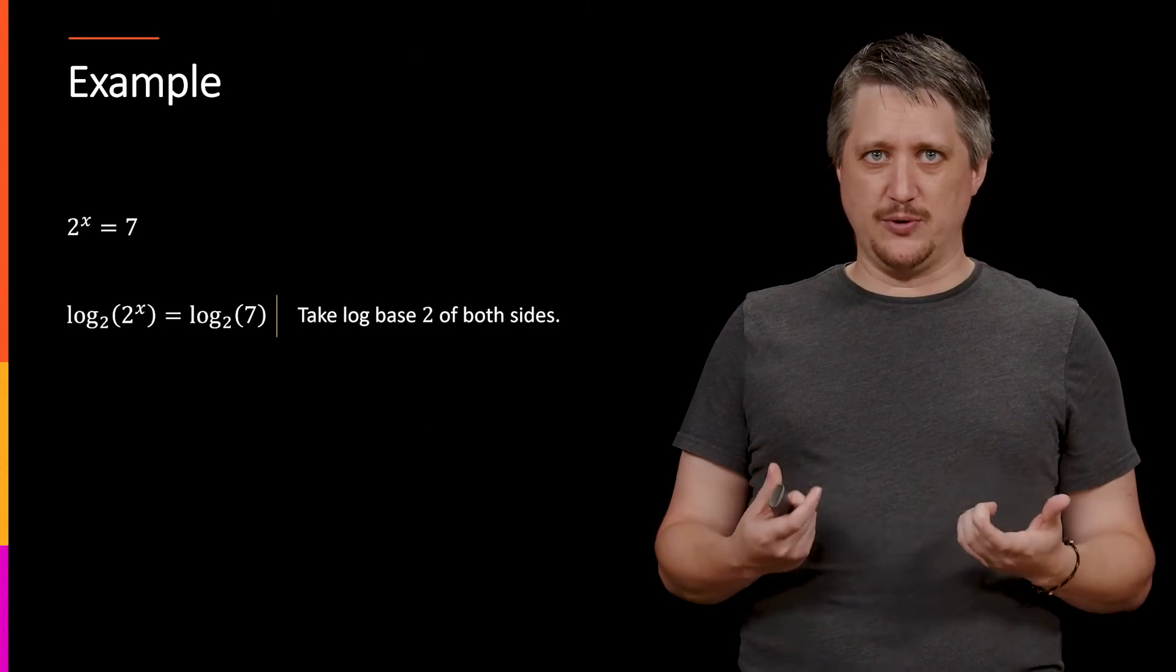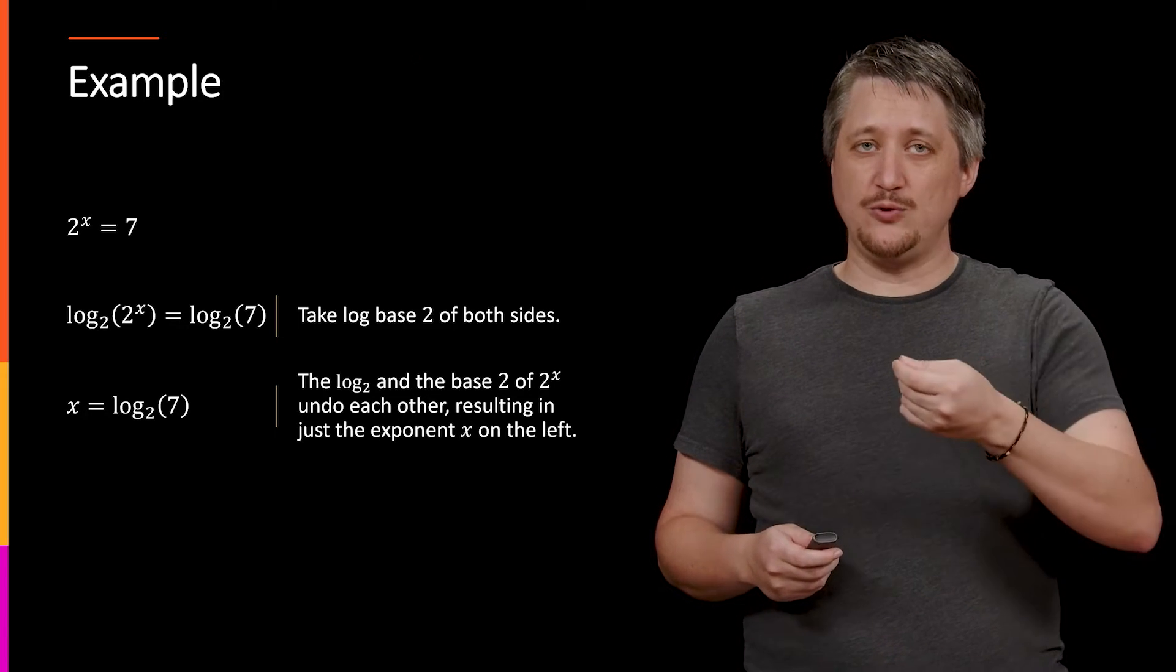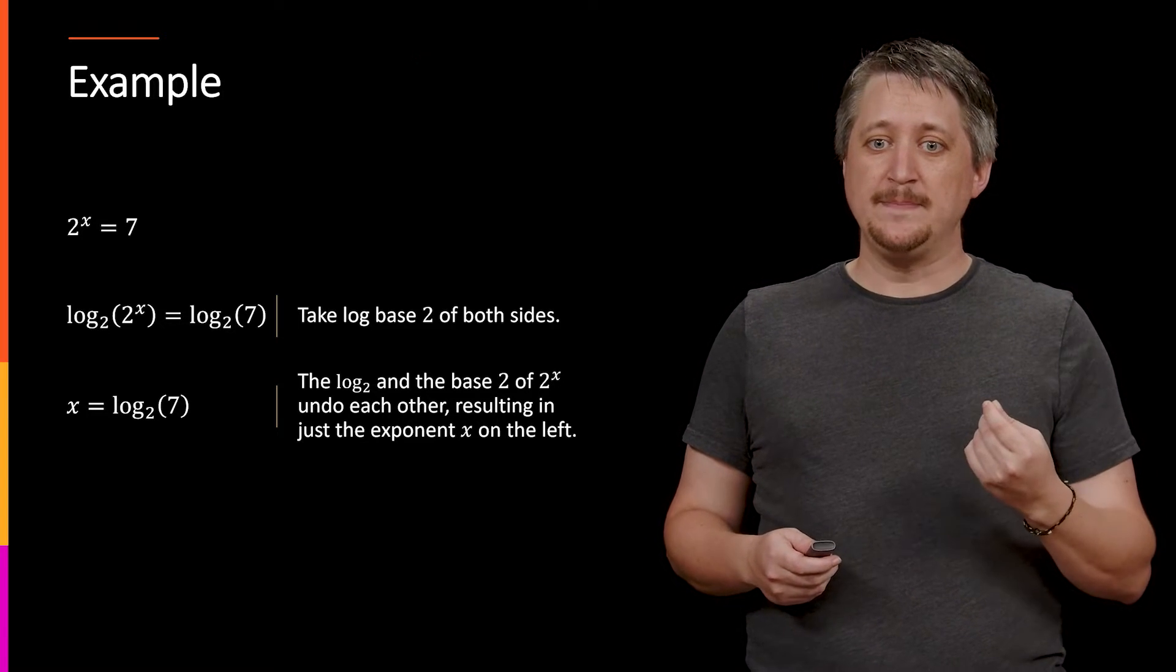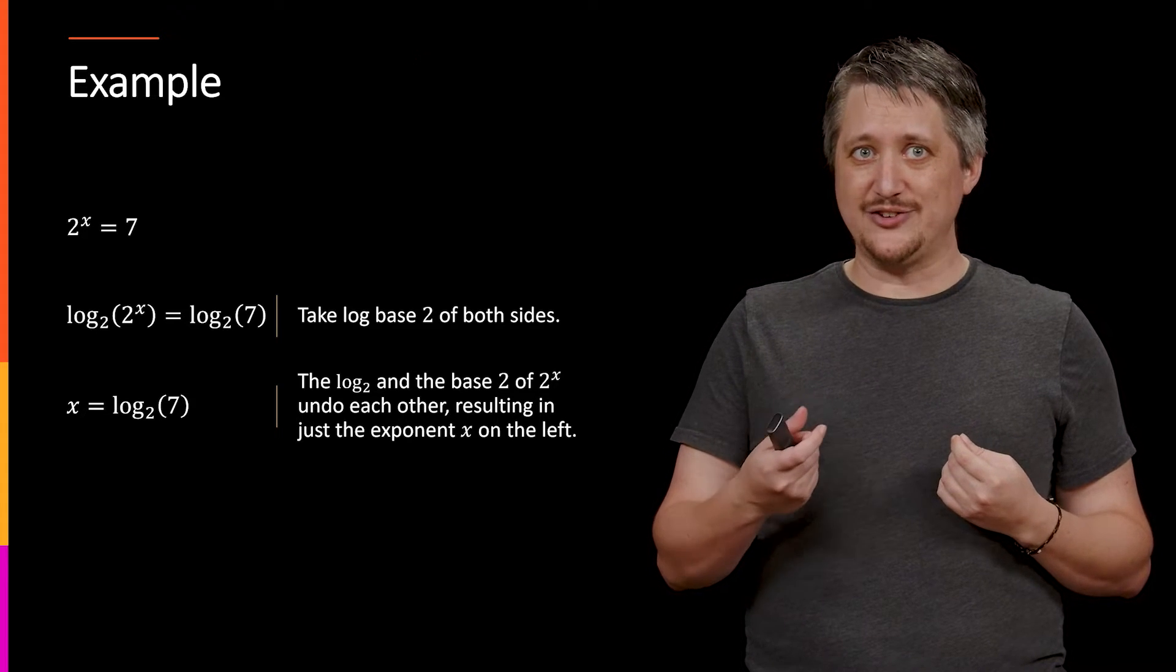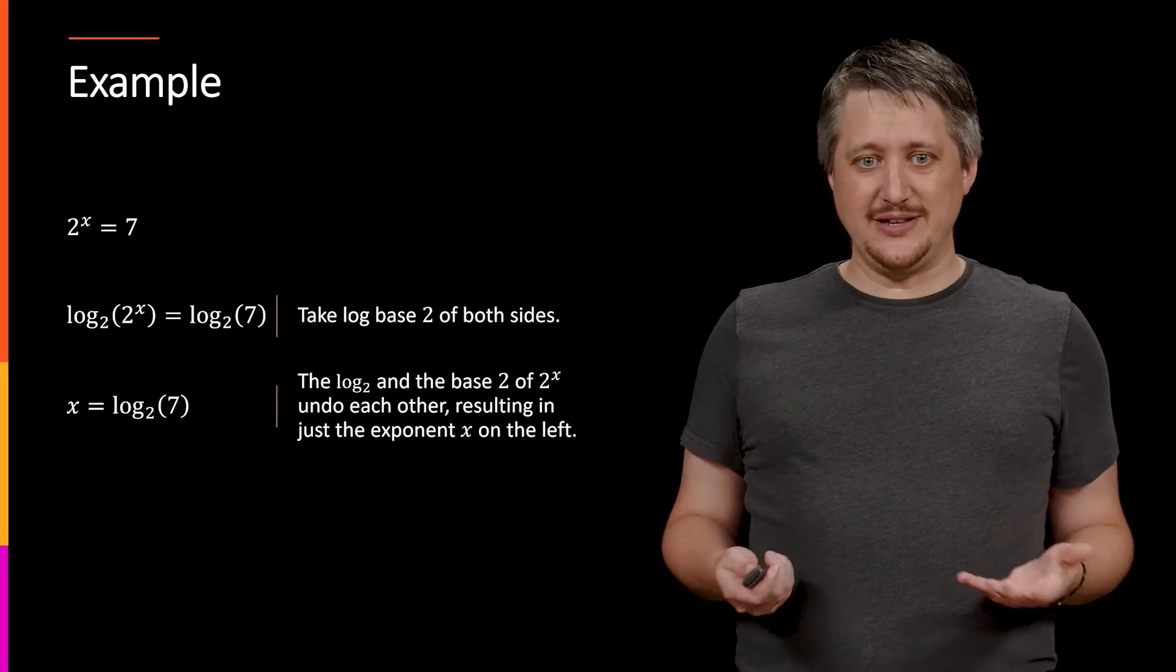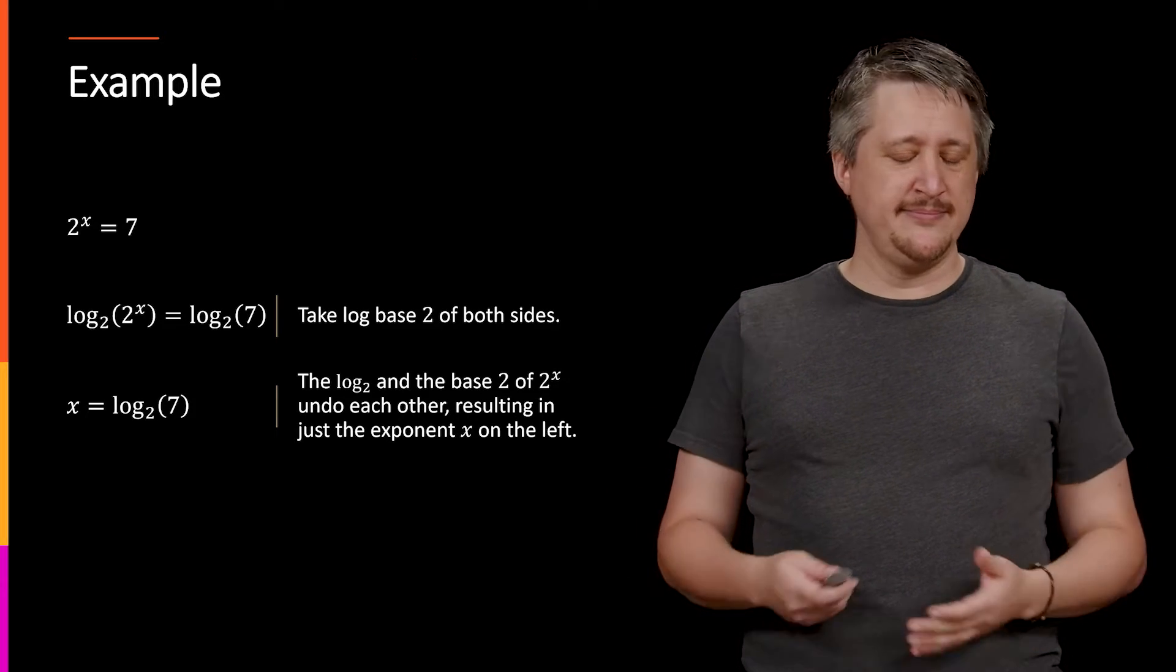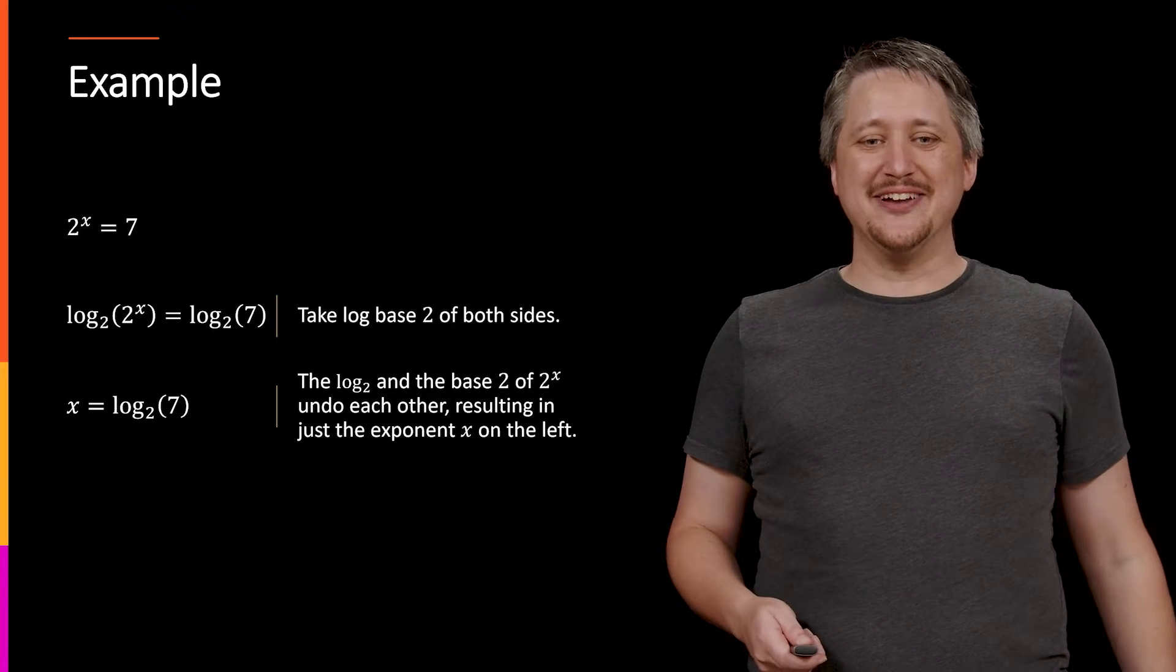I take log base 2 of both sides. On the left, that log base 2 and the 2 part undo each other, and the result is just what the exponent was on that 2 - in this case, it's just x. On the right, it's log base 2 of 7, and there's not a nice way to represent that.